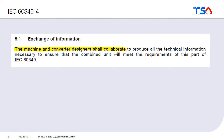One interesting thing is that the standard explicitly states that the machine and the converter designers shall collaborate. This is because in the railway industry, motors and inverters are very often produced and designed by different people — not only by different departments, but also often by different companies. It is very important that the machine really fits to the converter and vice versa. Therefore, it is written in the standard that they shall collaborate at a very early stage so that the machine can meet the requirements.